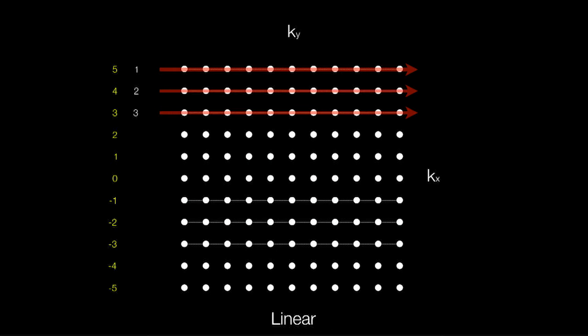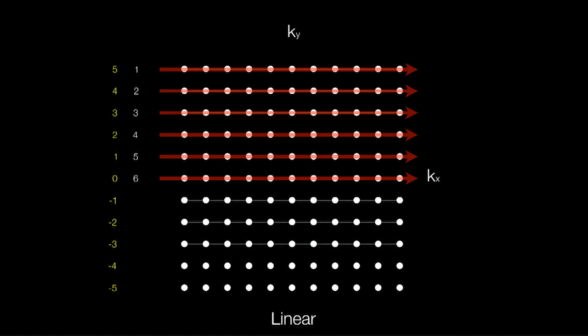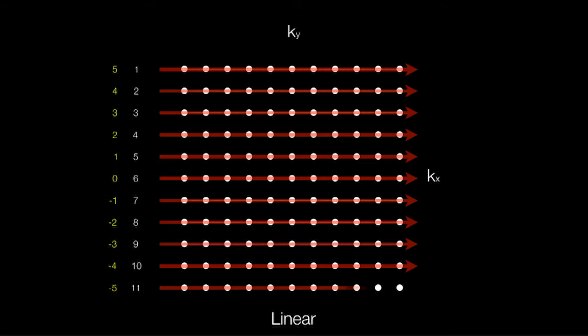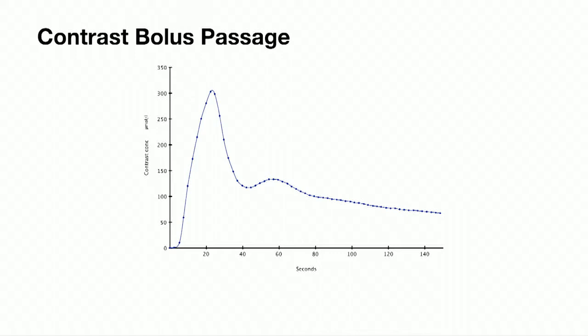In linear K-space, which is the conventional way we collect K-space, we collect each line starting with the peripheral lines and only hit the centre of K-space about halfway through the acquisition. Everything up to that point has been mainly peripheral, and if you're talking about multiple seconds of acquisition, that can have a real impact on how you collect your contrast and how you time it to your bolus.